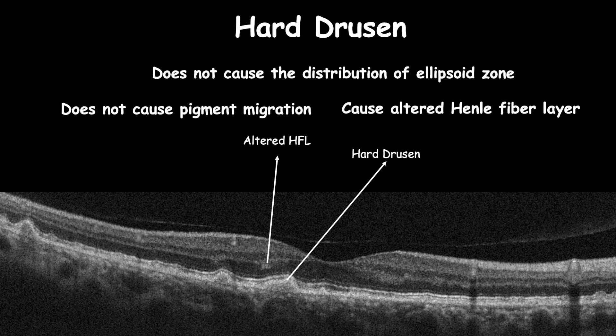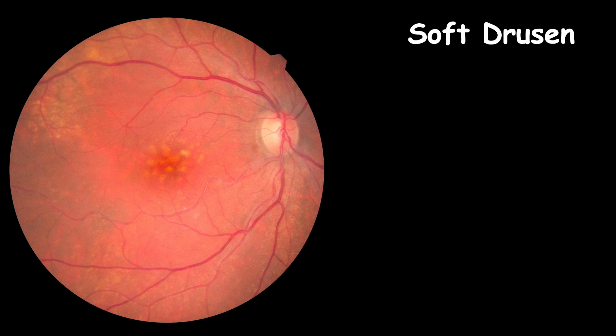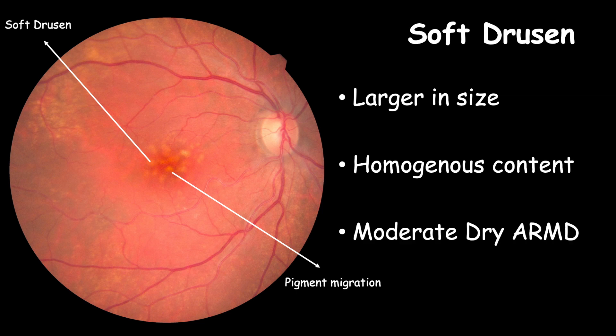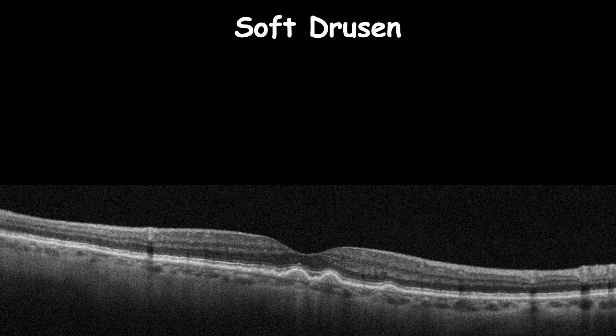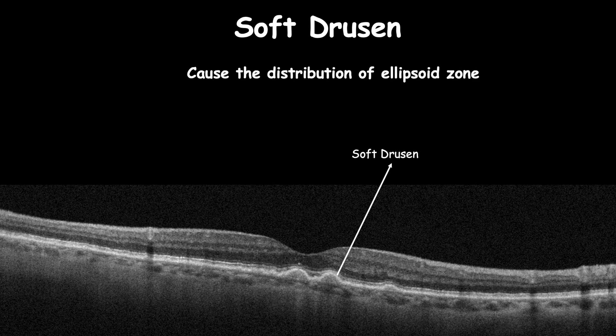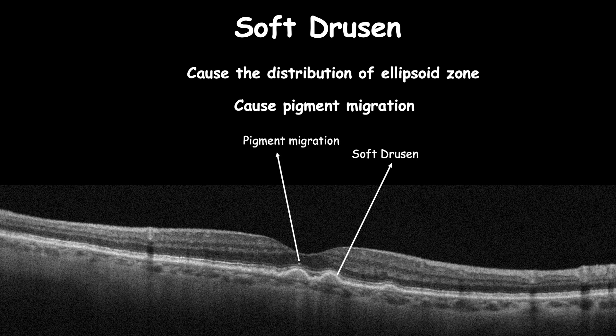When hard drusen collapse and enlarge in size, they can form soft drusen, which become more homogeneous with blurred edges. Soft drusen are the hallmark of moderate dry AMD. On OCT, soft drusen feature both disturbed ellipsoid zone and pigment migration, found as hyperreflective foci in the outer retinal tissues.